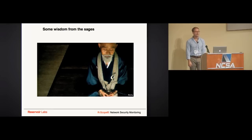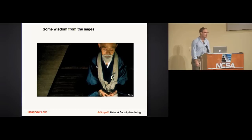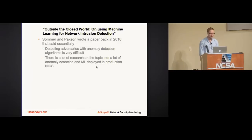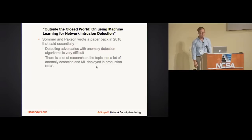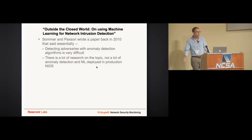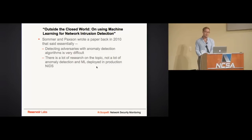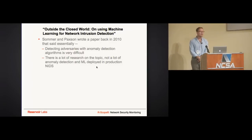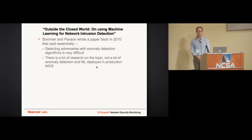It turns out there is more literature on this from the Bro community. Robin and Vern wrote a paper in 2010 called 'Outside the Closed World: On Using Machine Learning for Network Intrusion Detection.' This paper is really good. The main idea, as I interpreted it, is that detecting adversaries with anomaly detection is really difficult. There's a lot of research on the topic, but not a lot of machine learning and anomaly detection deployed in production.